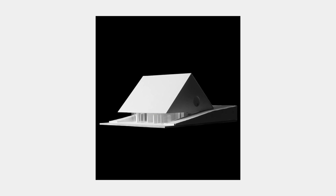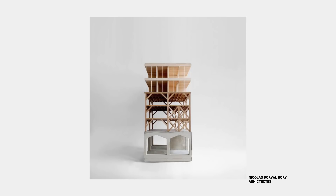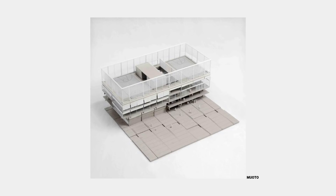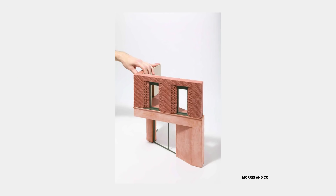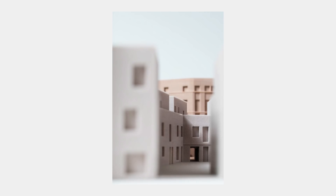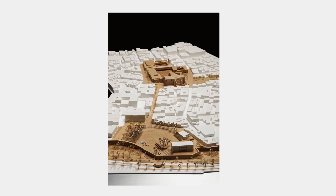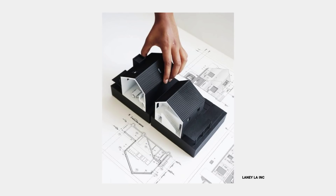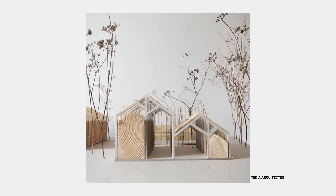Nothing is ever going to replace physical models. A physical model is the first construction that you make of your project. It is also the opportunity of the architect to construct and build in physical space their architectural idea. What we usually do is just draw and pass those drawings onto people who can interpret them and build space. But with a physical model, you as an architect are actually constructing your own space. You are the ideator and builder of your architecture.